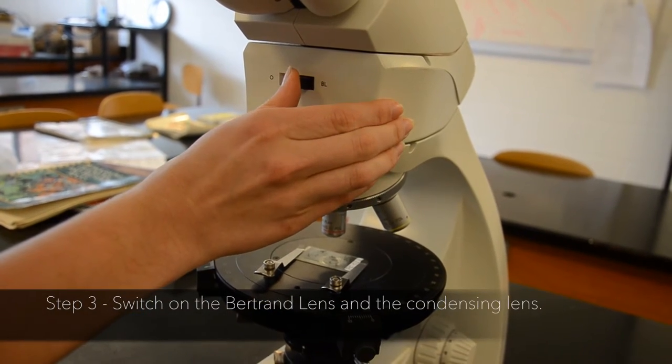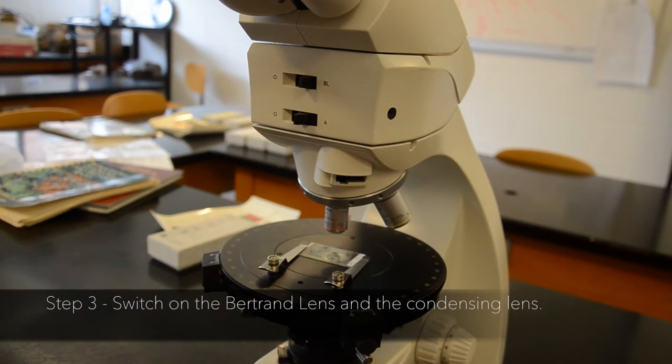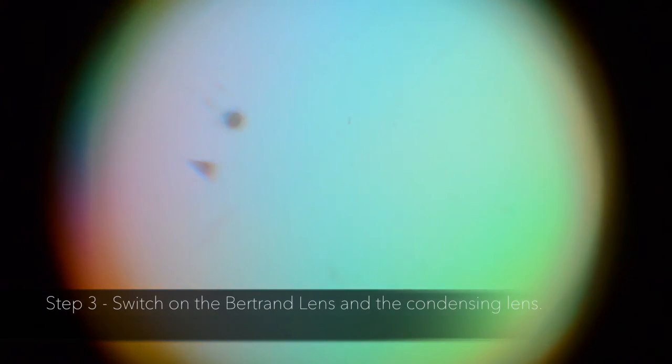Step 3: Switch on the Bertrand lens and the condensing lens. On this microscope, the switch labeled BL above the cross-polarizer switch inserts both.